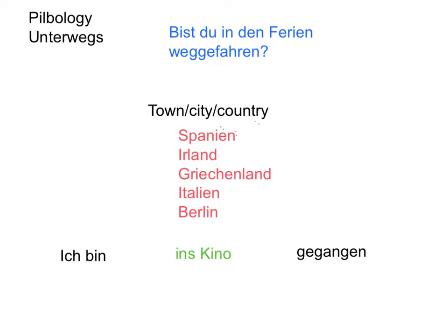As you may already know from watching the video on the past tense, the ge — the past participle word — goes at the end of the sentence or the question. So, bist du in den Ferien weggefahren? Let's jump to a sentence we already know, which you'll find in the other past tense video on the perfect tense. For example: ich bin ins Kino gegangen — I went to the cinema. You've got the gegangen and the ich bin, because rather than implying you're standing still, it implies movement. Which is why we use sein rather than haben.